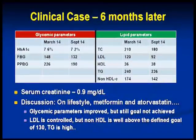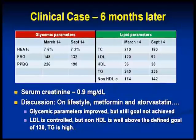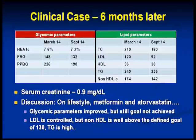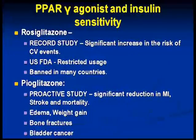Looking at the values between March and September — that is 6 months later — the HbA1c is better, fasting is almost near goal, but postprandial blood glucose is still a little elevated. Focusing on the lipids: though cholesterol and LDL have improved, HDL has risen a little but not where we would want it. Triglycerides are almost where they were, and non-HDL is still 142. The goal for non-HDL is still not achieved.